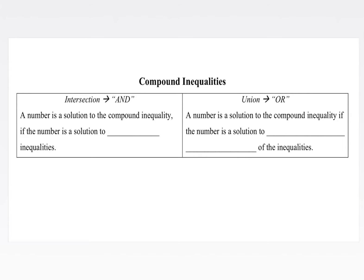For 'and' compound inequalities, a number is a solution to the compound inequality if the number is a solution to both inequalities. Whereas with 'or' compound inequalities, a number is a solution to the compound inequality if the number is a solution to at least one of the inequalities — it does not need to be a solution to both, though it could be.